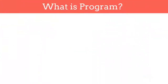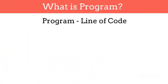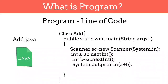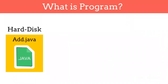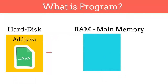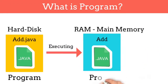First, let's understand what is program. Program is nothing but a line of code that we write to achieve some task. Consider you want to write a Java code that will add two numbers — the line of code you write to achieve this task is called a program. The program is saved in hard disk. When you execute a program, this program will be moved to the RAM and it will start executing. Program in execution is called as process.